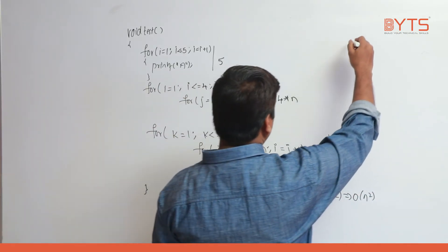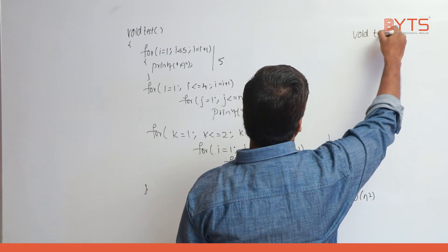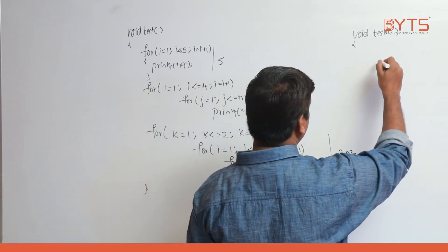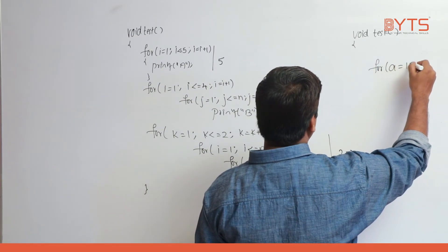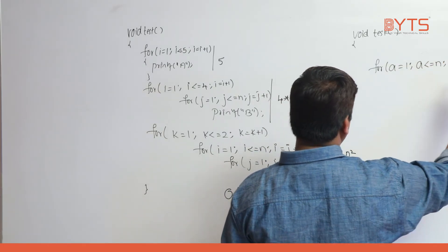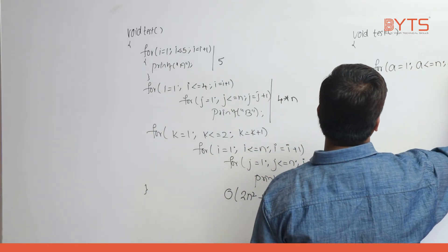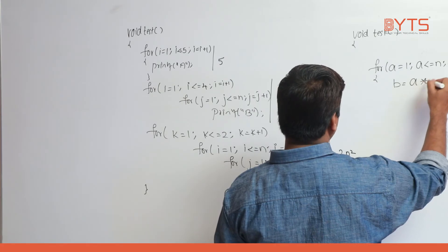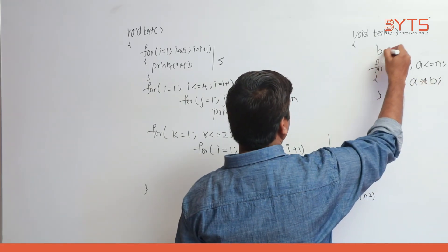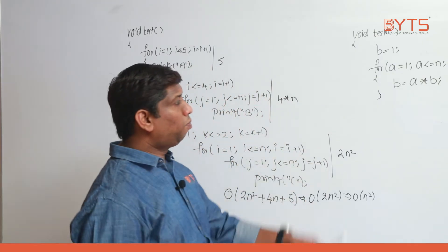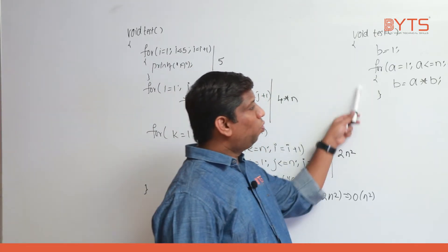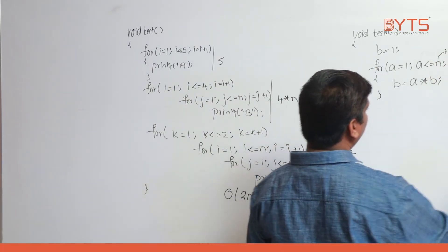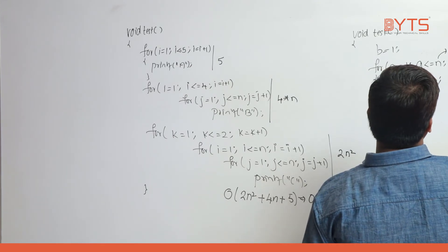Let us take another program. Void test. For a equal to 1, a less than or equal to n, a equal to a plus 1: b equal to a star b. Initially b is equal to 1. Let us take n value as 4 and trace what this program does.